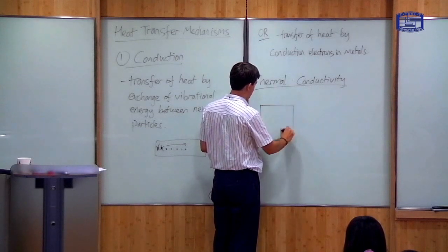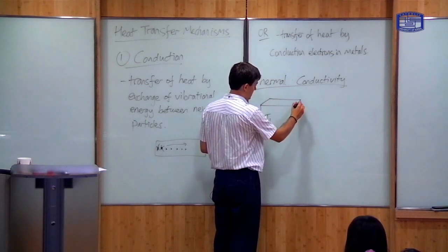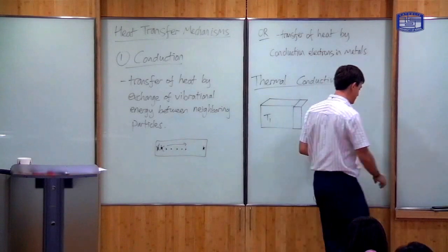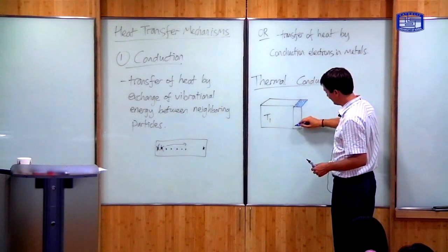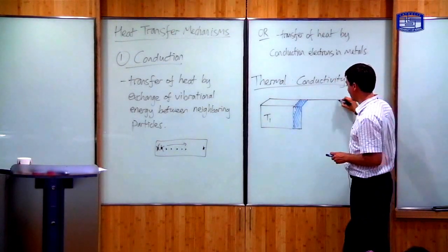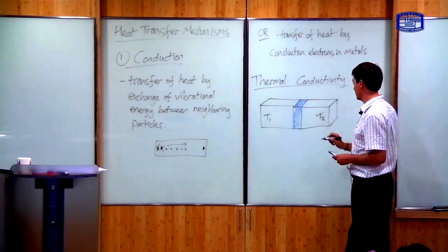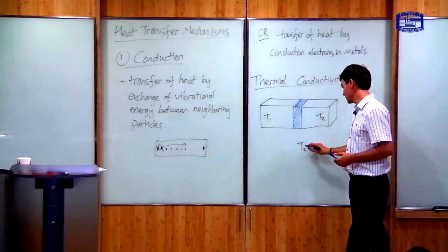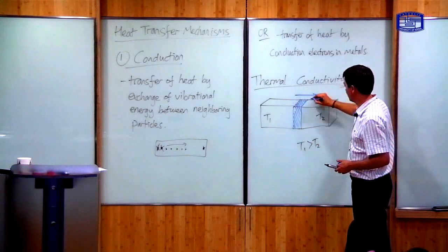The setup is as follows. Suppose I've got a reservoir held at a constant temperature T1. I then connect it to a slab of conducting material, which may be a metal, a block of stone, or a box containing a gas. On the other end, I connect it to another reservoir which has a fixed temperature T2, where T1 is greater than T2. In this case, there will be a flow of heat from the first reservoir to the second.